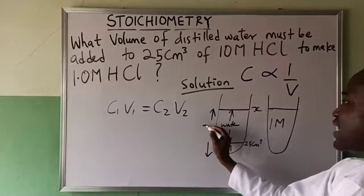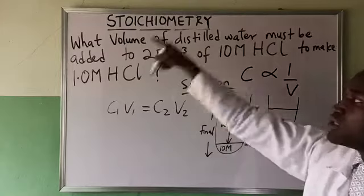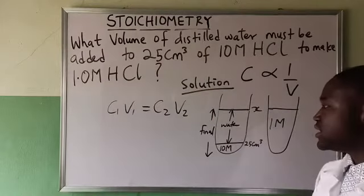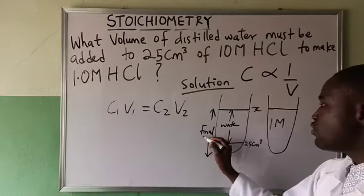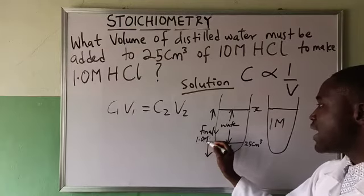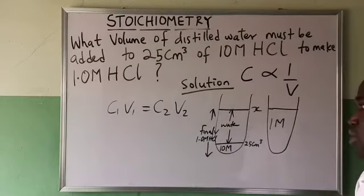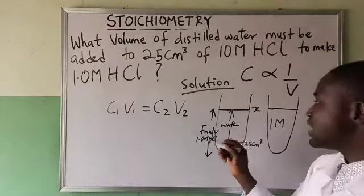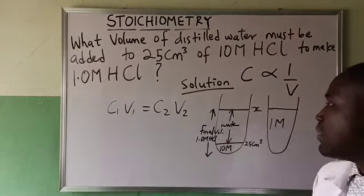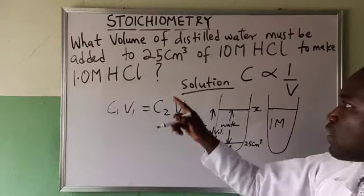So here is the final volume, final volume of the diluted HCl, final volume of 1.0 molar HCl. That is from here to here, okay?